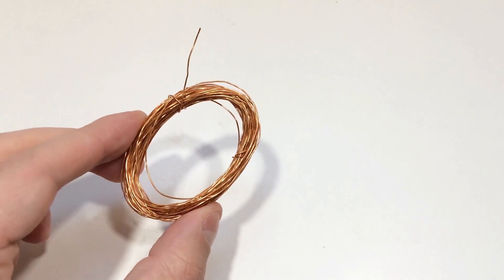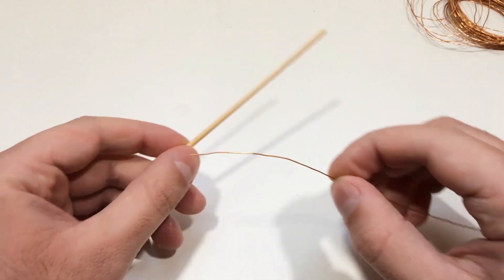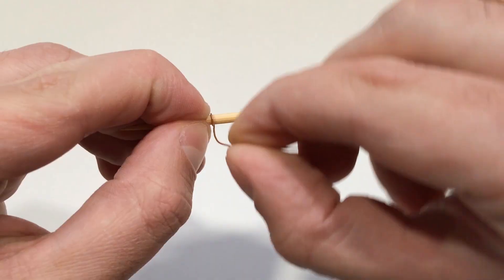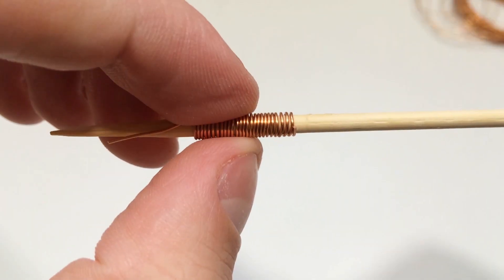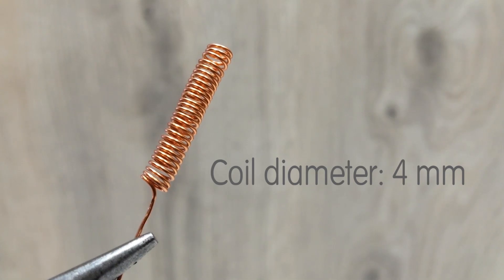Let's start with the antenna. Cut about 30 centimeters of thin copper wire and wrap it tightly around a bamboo skewer in a spiral, about 4 to 5 millimeters in diameter. This little coil will act as the sensor that picks up electromagnetic fields from wires or nearby metal.